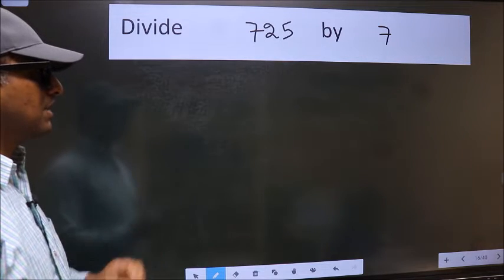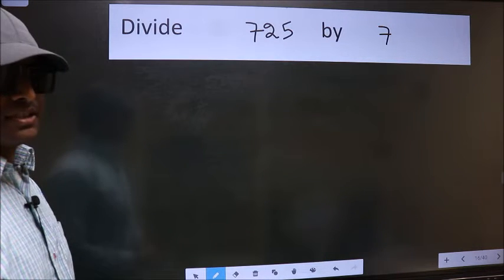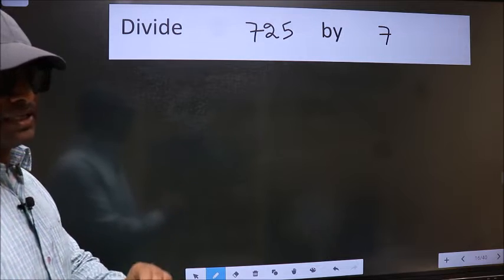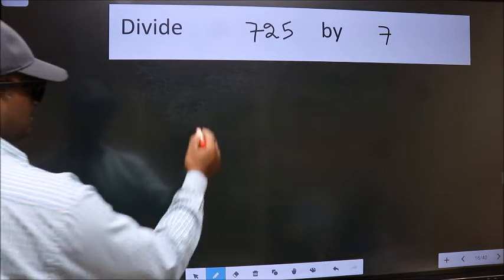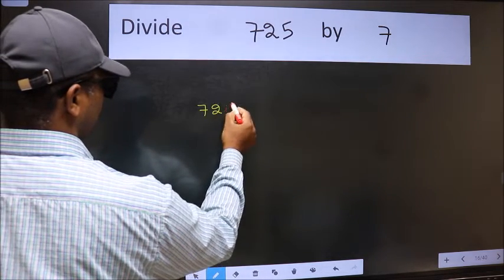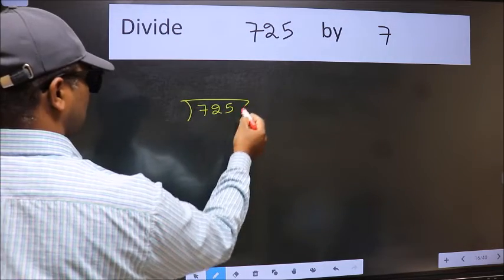Divide 7.25 by 7. To do this division, we should frame it in this way. 7.25 here and 7 here.